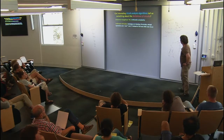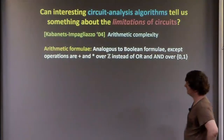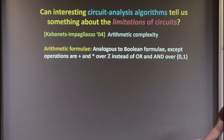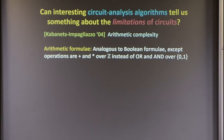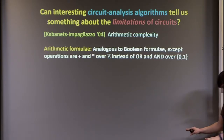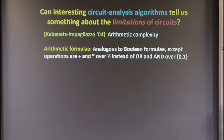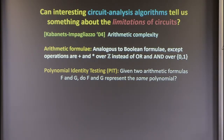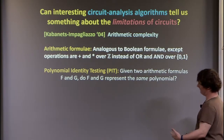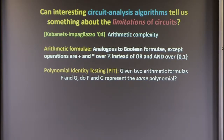I want to say a bit about arithmetic complexity. It deals with a different model — not the usual AND, OR, NOT circuits, but arithmetic formulae where operations are plus and times over integers instead of OR and AND. The rough analog of the SAT problem for arithmetic formulae is polynomial identity testing: given two arithmetic formulas F and G, do they represent the same polynomial, with all coefficients matching exactly in every single term?